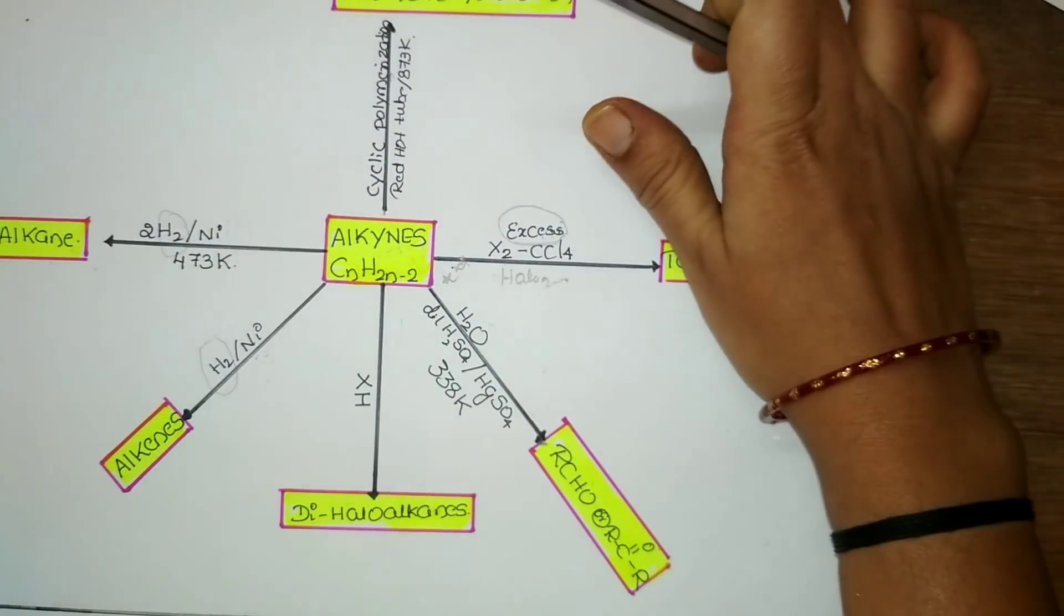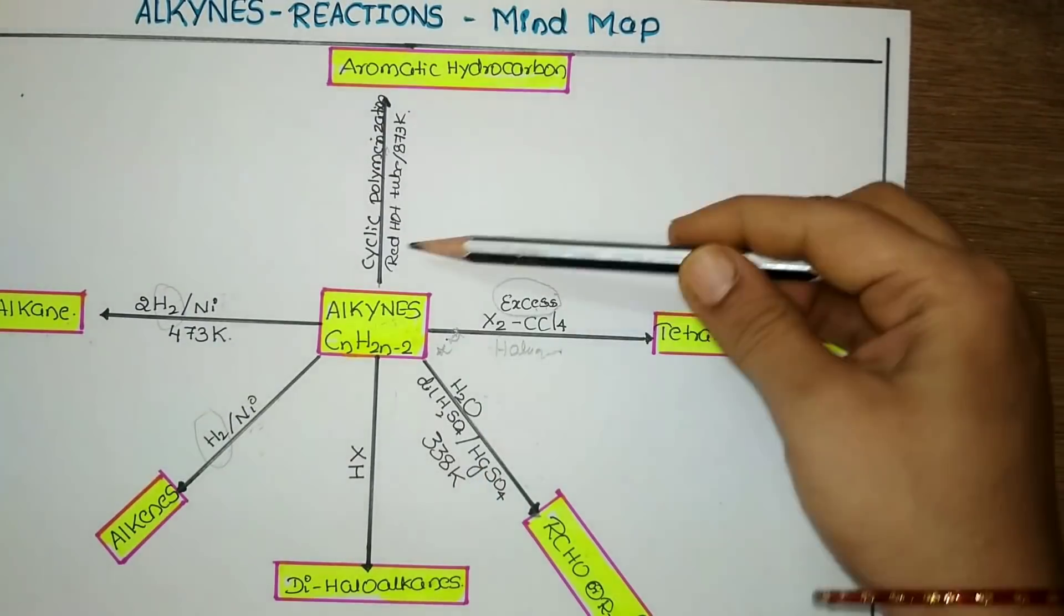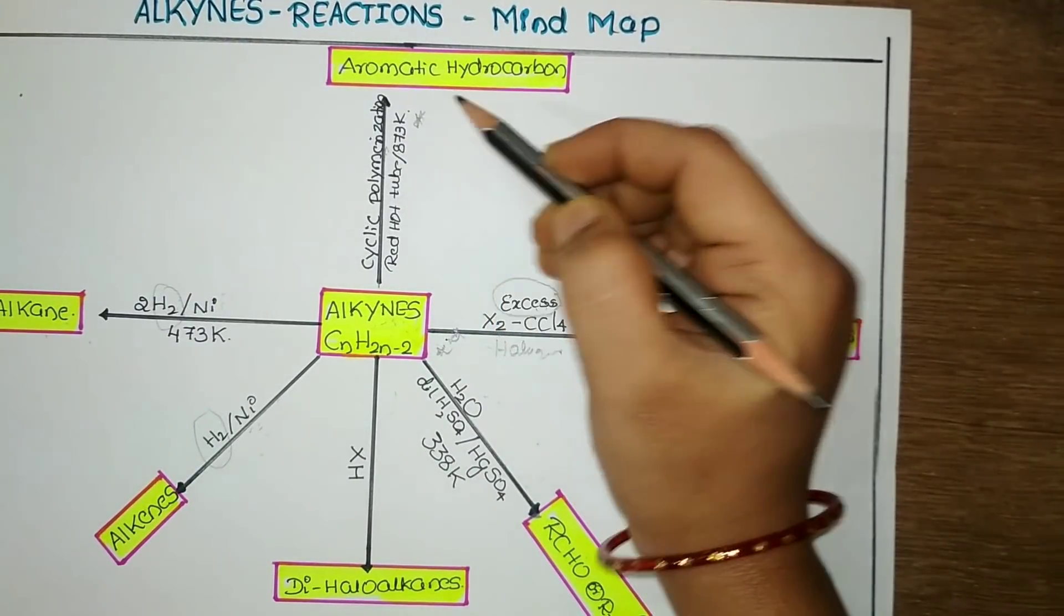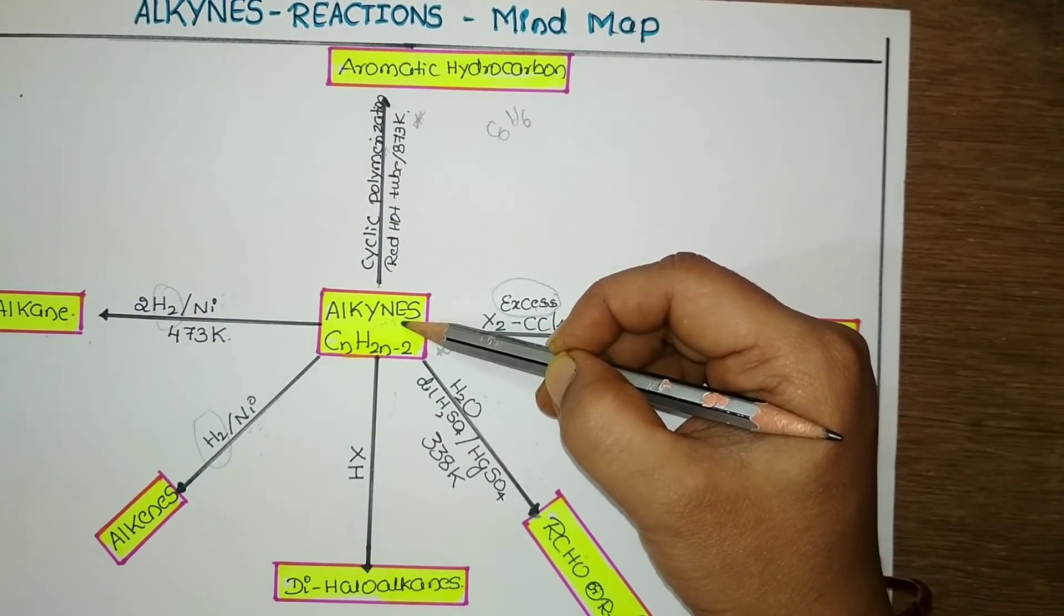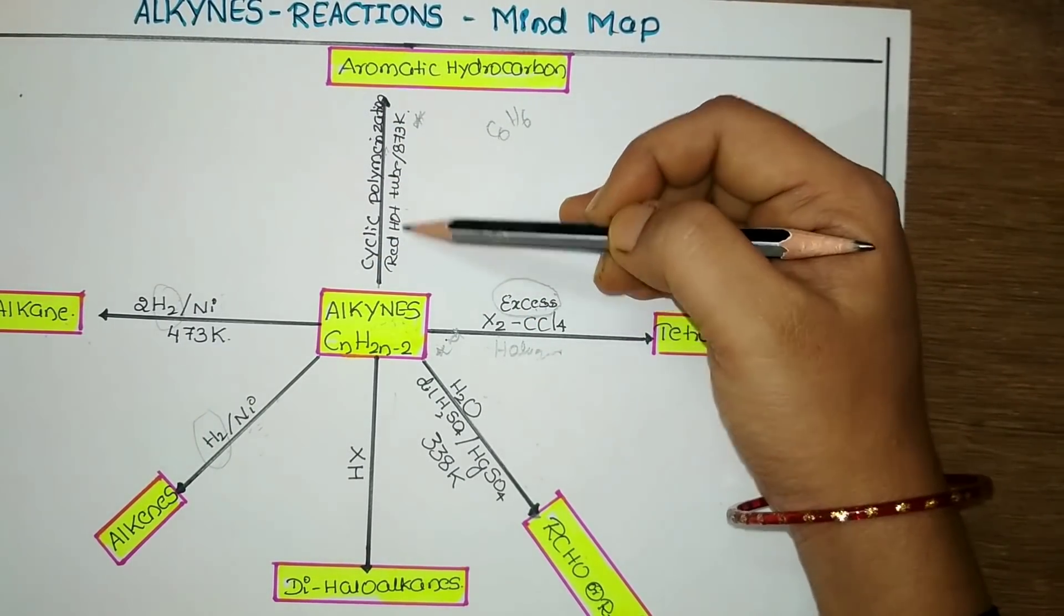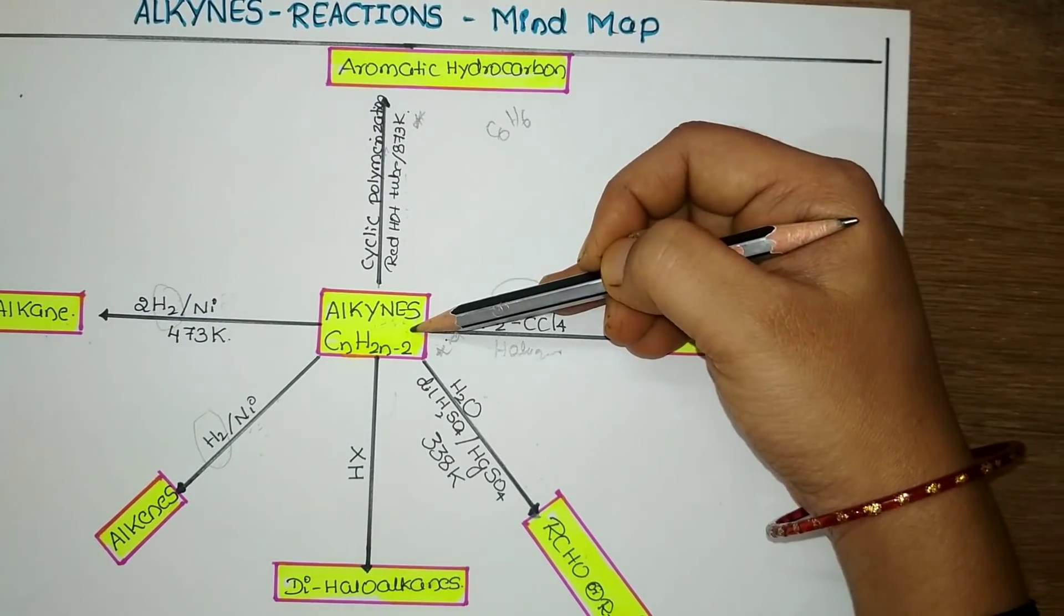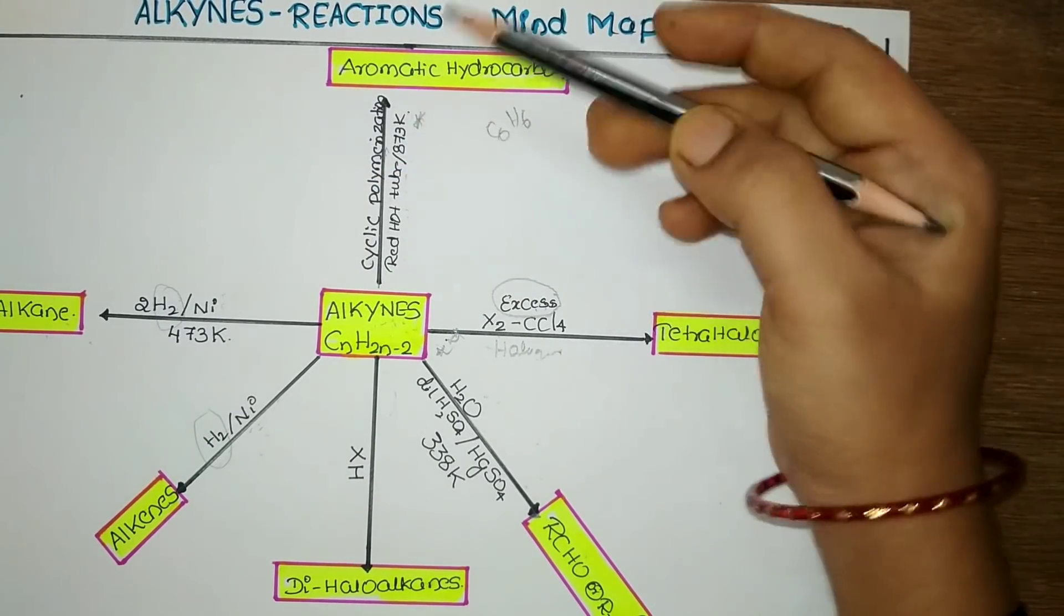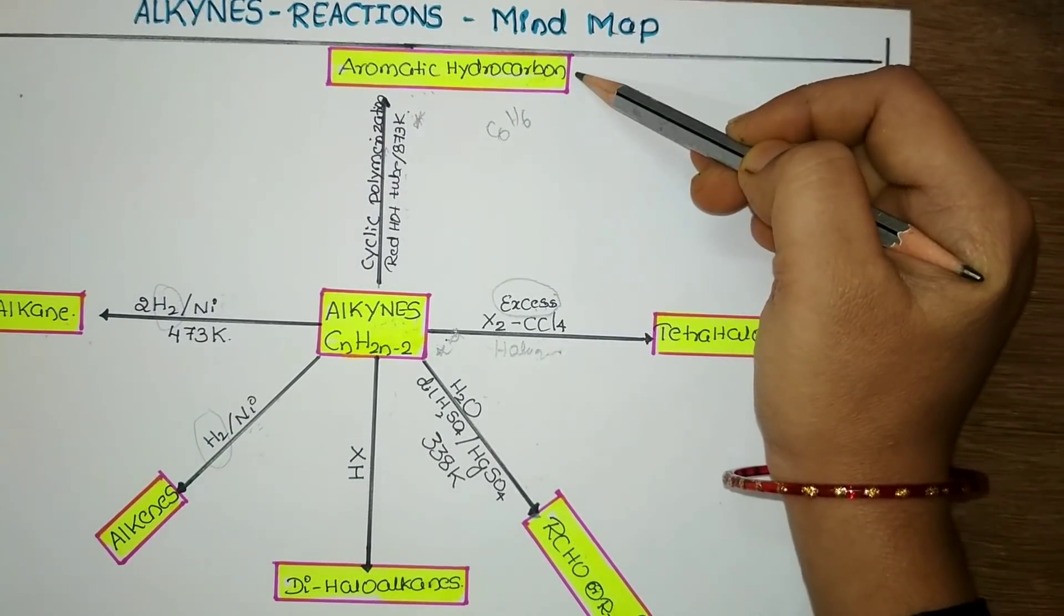The last method is when alkynes undergo cyclic polymerization. This is very important for how benzene is formed. When alkynes undergo cyclic polymerization in presence of red hot tube, if we take alkynes and carry out polymerization at 873 Kelvin, we will get the respective aromatic hydrocarbon. It starts with benzene preparation.